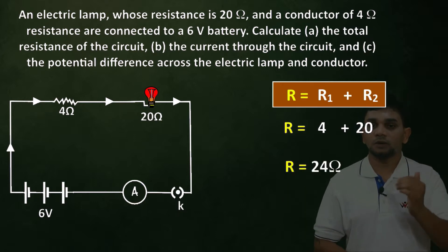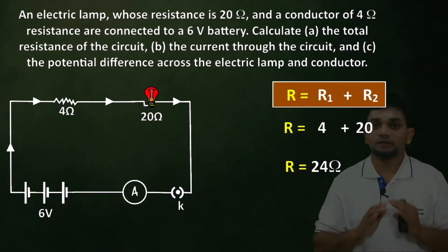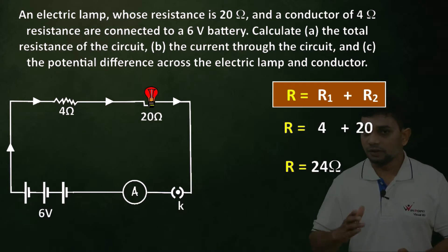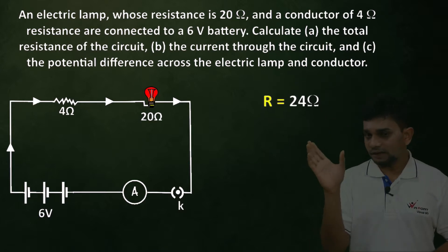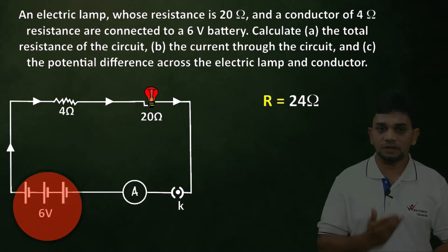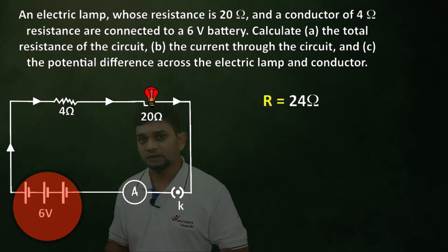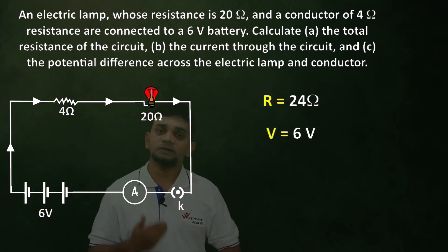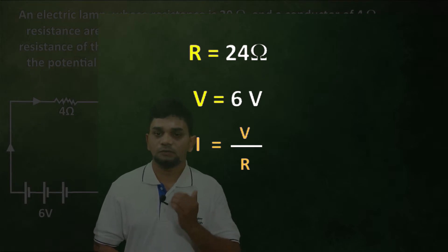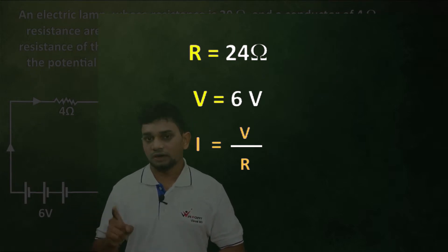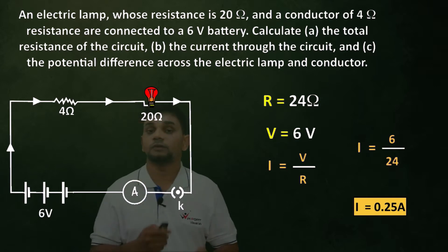Now for question (b), the current through the circuit. In series connection the current is the same throughout. Using Ohm's law: I = V/R. The voltage V = 6 volt and R = 24 ohm, so I = 6/24 = 0.25 ampere.